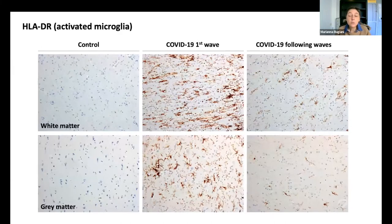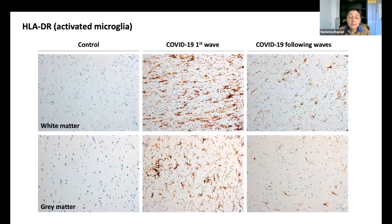That was what we gathered during the first wave, but then we had other waves — Delta, Omicron. So we looked for differences between the different waves. Here you have a control on the left of white and gray matter, then the first wave with activated microglia in both white and gray matter. You can see that in the following waves there is a pathologic activation of microglia, but it has never been as massive as during the first wave.